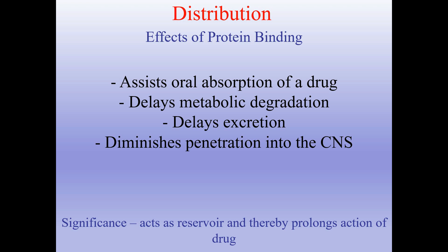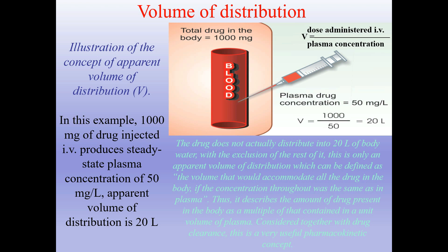Volume of distribution. In this example, 1000 mg of drug injected IV produces a steady-state plasma concentration of 50 mg per liter, giving an apparent volume of distribution of 20 liters. The drug doesn't actually distribute into 20 liters of body water — this is only an apparent volume, defined as the volume that would accommodate all the drug in the body if the concentration throughout was the same as in plasma. It describes the amount of drug present as a multiple of that contained in a unit volume of plasma. Considered together with drug clearance, this is a very useful pharmacokinetic concept.